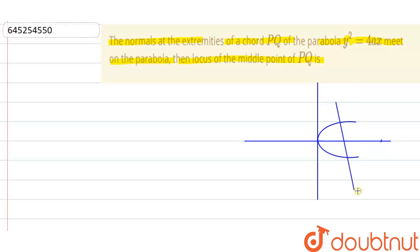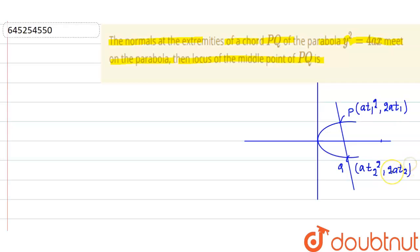Let's say this is a normal. This point is P and this point is Q. I assume point P is (at₁², 2at₁) and point Q is (at₂², 2at₂). These are the PQ points. Since it is a normal that again intersects the parabola, there is a relation: t₂ = -t₁ - 2/t₁.